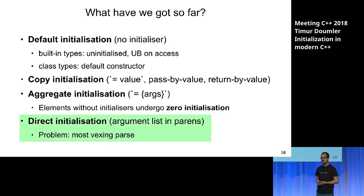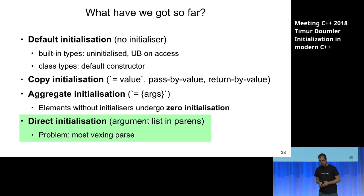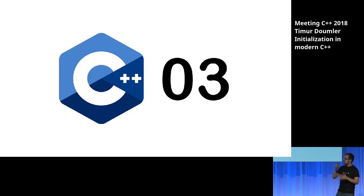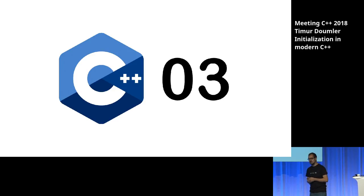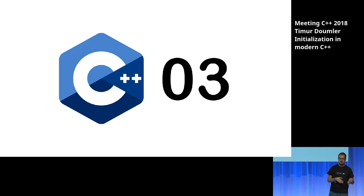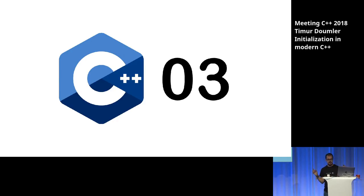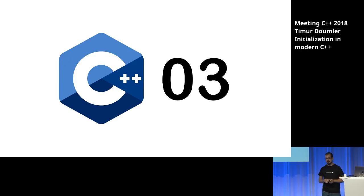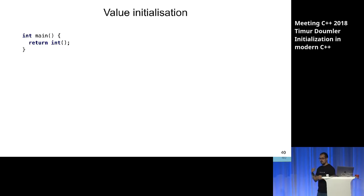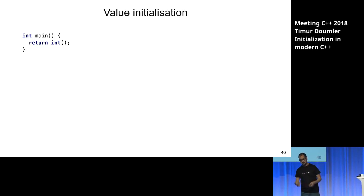The next version after C++98 is C++03. Most people think C++03 is just a minor bug-fix release, but actually it introduced some new things. C++03 introduced a pretty big thing: a new way of initializing objects that doesn't exist in C++98. That's called value initialization. So what does this program do? It returns zero. In C++98, creating an int without an initializer and accessing that value would be undefined behavior. But in C++03, if you initialize something with an empty paren initializer, that's value initialization.